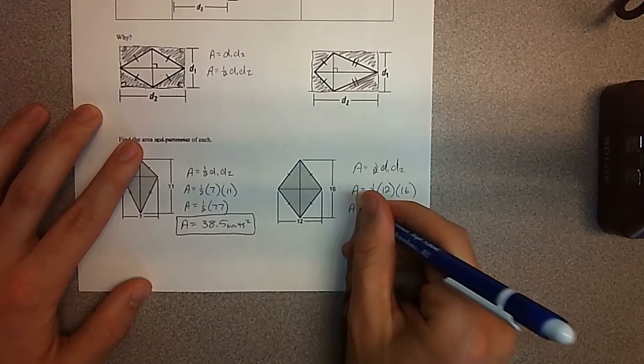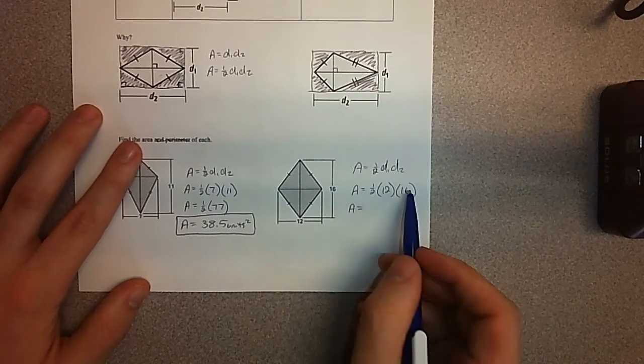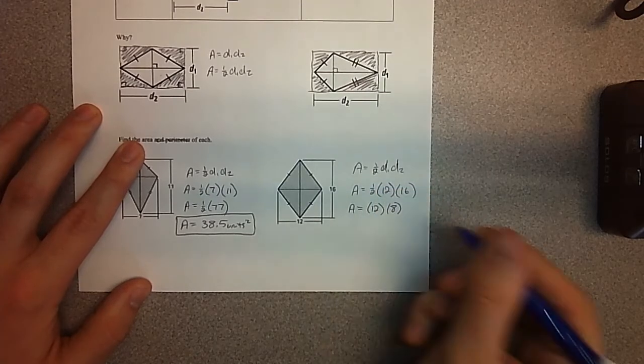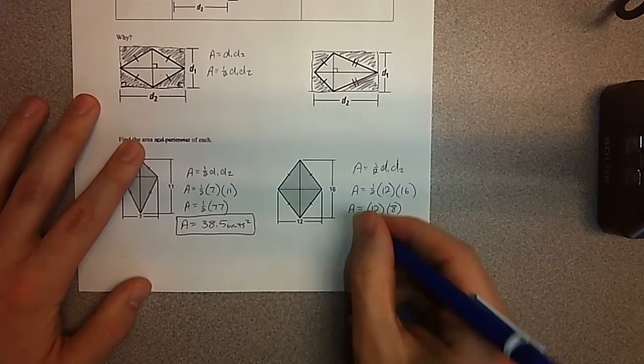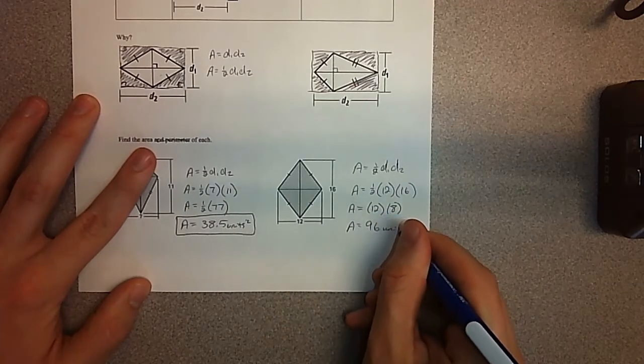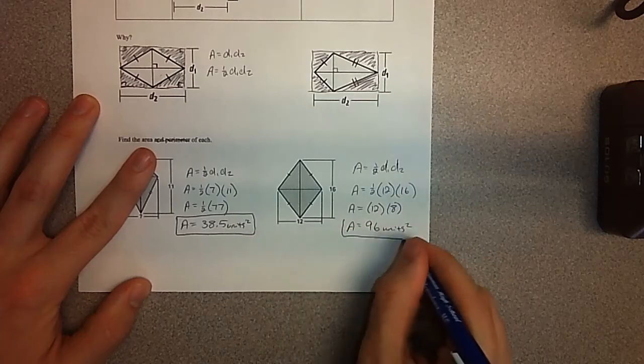When you multiply by one-half, don't take half of both. Just half of one of them. I'm going to do half of 16. It makes my multiplication a little bit easier. Half of 16 is 8. This way, I don't need a calculator, per se. 12 times 8, I would get 96. And that would be units squared or square units.